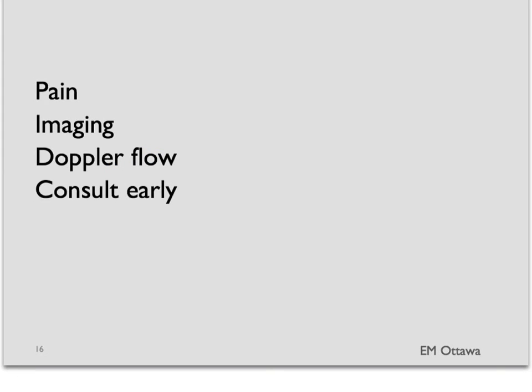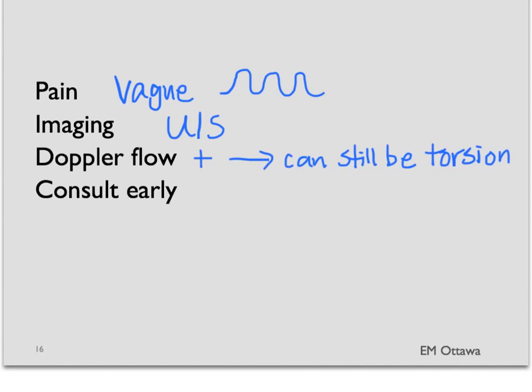In summary, in this segment, we discussed ovarian torsion. The main points are pain can be vague and intermittent. Ultrasound with Doppler flow is the diagnosis of choice. The presence of Doppler flow can still be an ovarian torsion. If we have a high clinical suspicion, consult the gynecologist early.